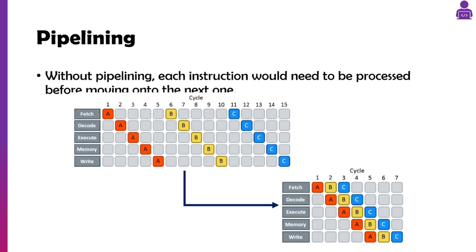This diagram here is something you'll get in the exam. Without pipelining, if we wait for each instruction to finish before the next one starts, you can see we've got five cycles to get instruction A done, then we start B, another four cycles, then we start C. Whereas with pipelining, once A has been fetched we fetch B, A gets decoded then B gets decoded, and so on. Instead of taking 15 cycles it takes seven. You do get questions where you have to fill in these kinds of grids, so it's useful to know.